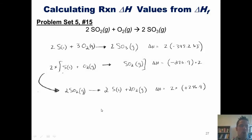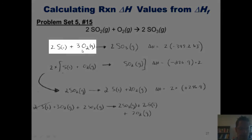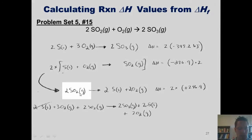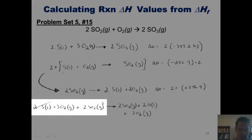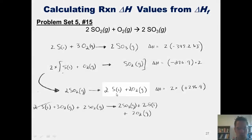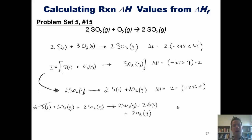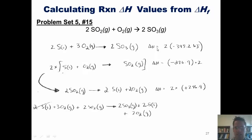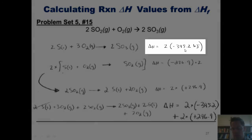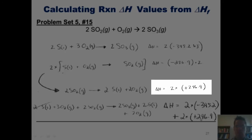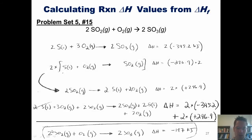When we add the two equations, we get the overall expression. On the left side: two sulfurs and three O2s, plus two SO2s. On the right side: two SO3s, two sulfurs, and two O2s. The two sulfurs cancel from both sides. To obtain the overall delta H, I add the individual delta Hs: 2 times negative 395.2 plus 2 times positive 296.9. The final equation matches our original target and the overall delta H comes out to negative 197 kilojoules.